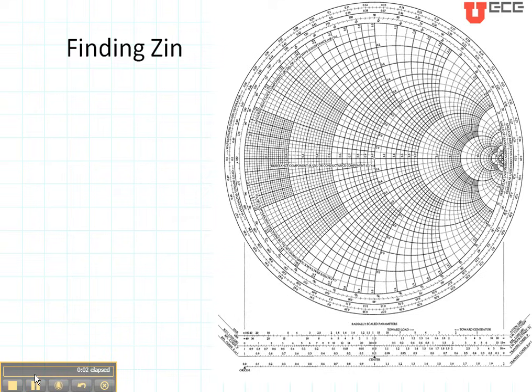Now we're going to talk about how to find the input impedance of a transmission line when you know its length L and you know its load ZL. And you also need to know its characteristic impedance Z naught.